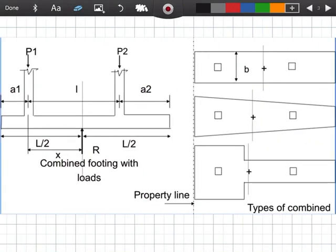So combined footings - when does that happen? Here in the drawing we have two columns on a single footing. We have plan view and elevation view.